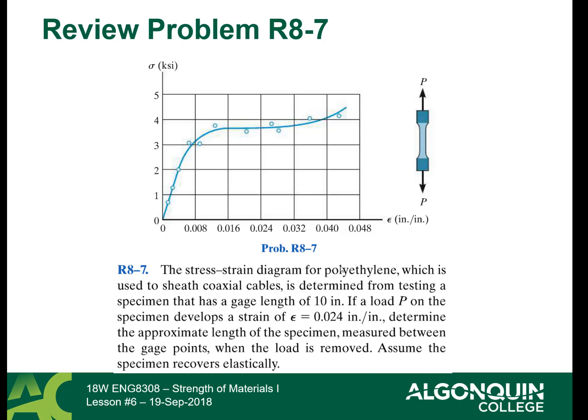So the stress strain diagram for polyethylene, which is used to sheath coaxial cables, is determined from testing a specimen that has a gauge length of 10 inches. That's the initial length between the two points that will be measured. If a load P on the specimen develops a strain of 0.024 inches per inch, determine the approximate length of specimen measured between the gauge points when the load is removed. So the elastic recovery, and you're going to have a permanent set of strain because you have gone up into the 0.024, so you're up in here.